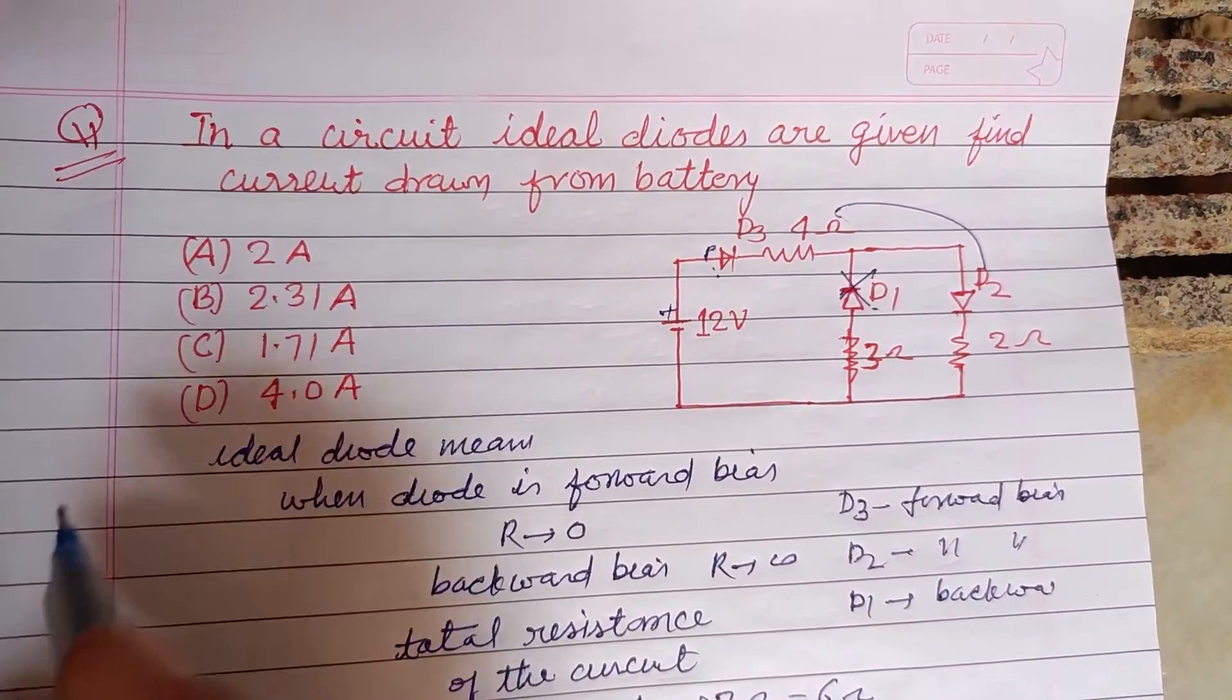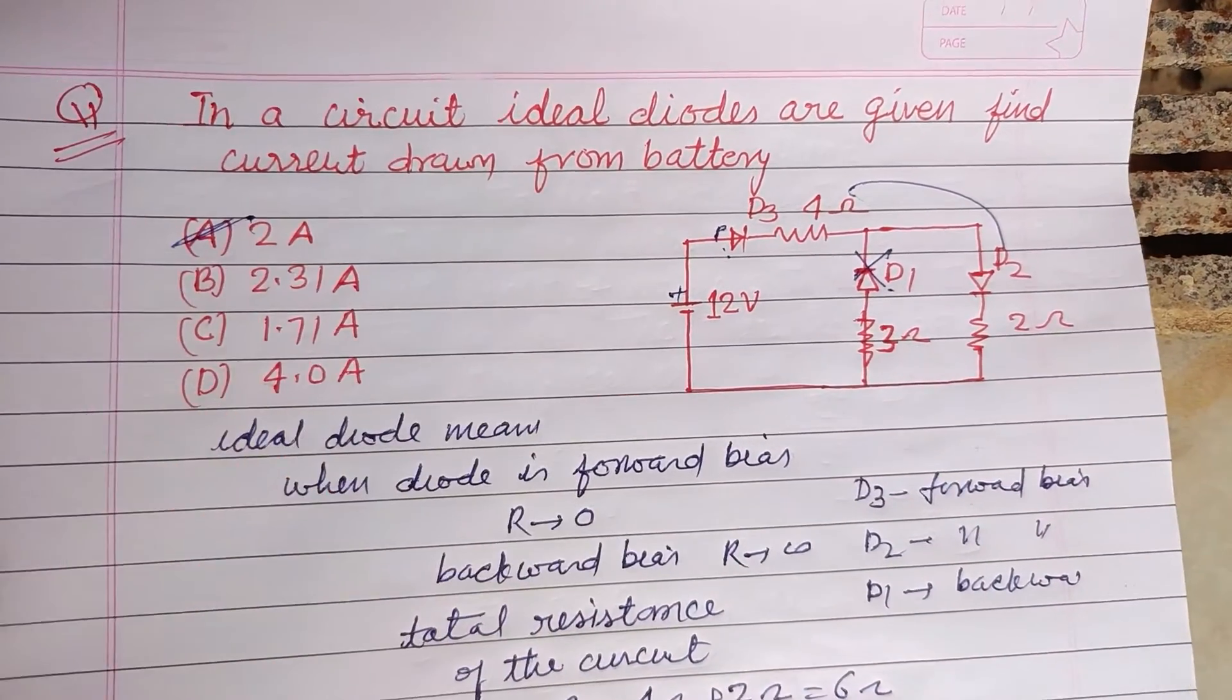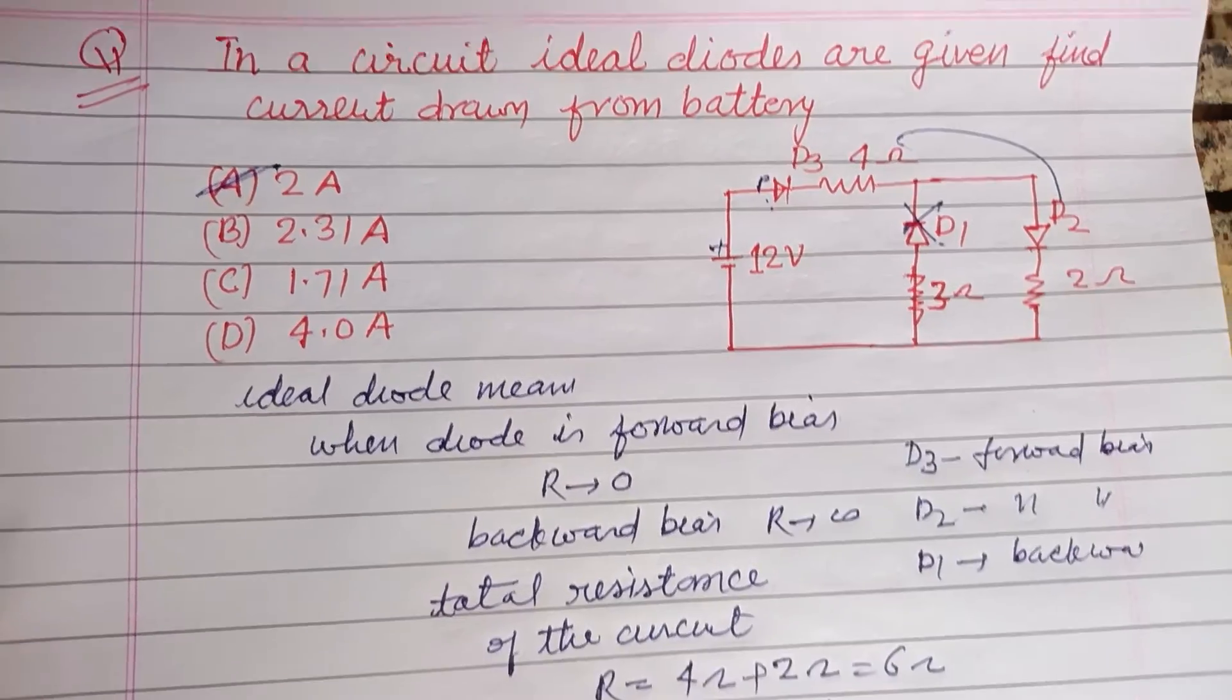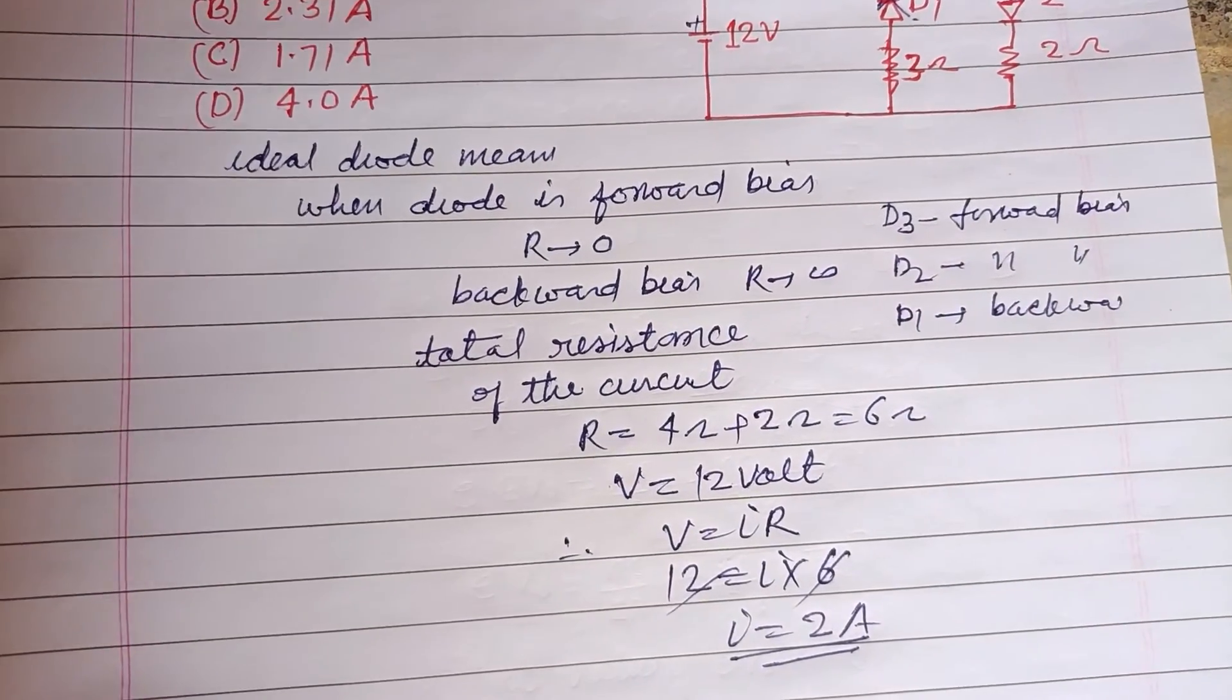So current drawn from battery is 2 amperes, which is found in option A. Therefore option A is correct. I hope you got it. Please like the video, subscribe the channel, thanks.